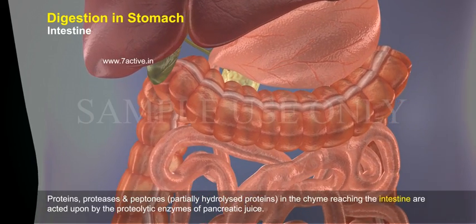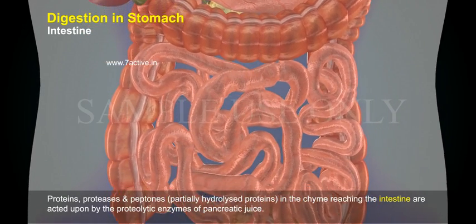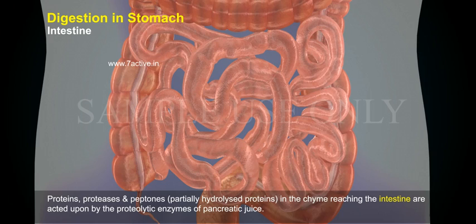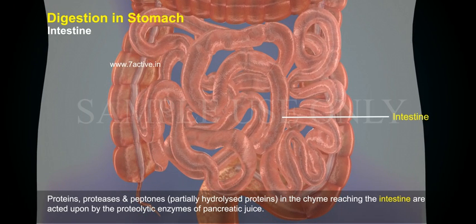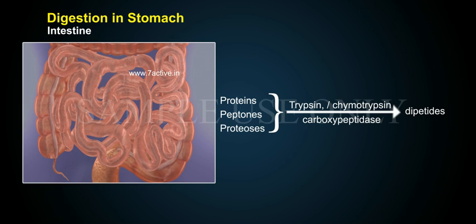Proteins, proteases, and peptones — partially hydrolyzed proteins in the chyme — reaching the intestine are acted upon by the proteolytic enzymes of pancreatic juice. Proteins, peptones, and proteases are acted on by trypsin or chymotrypsin, and carboxypeptidase converts them into dipeptides.